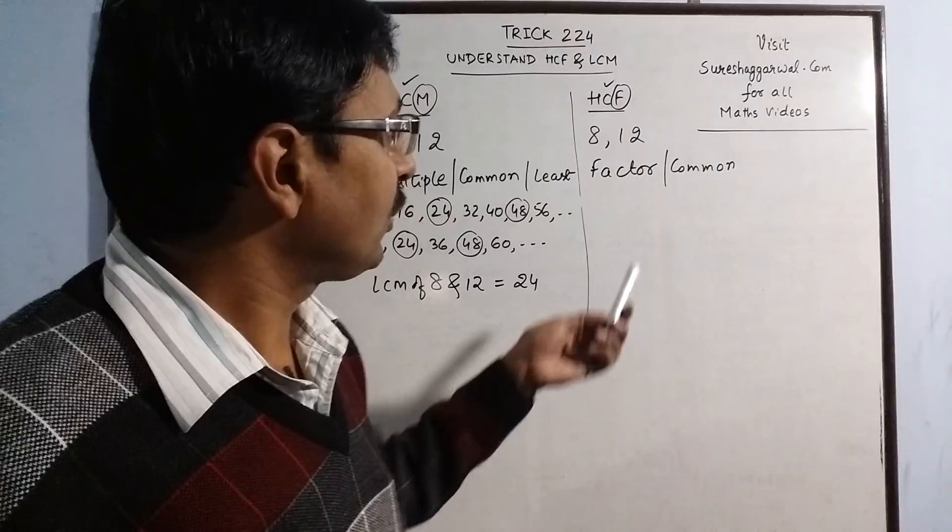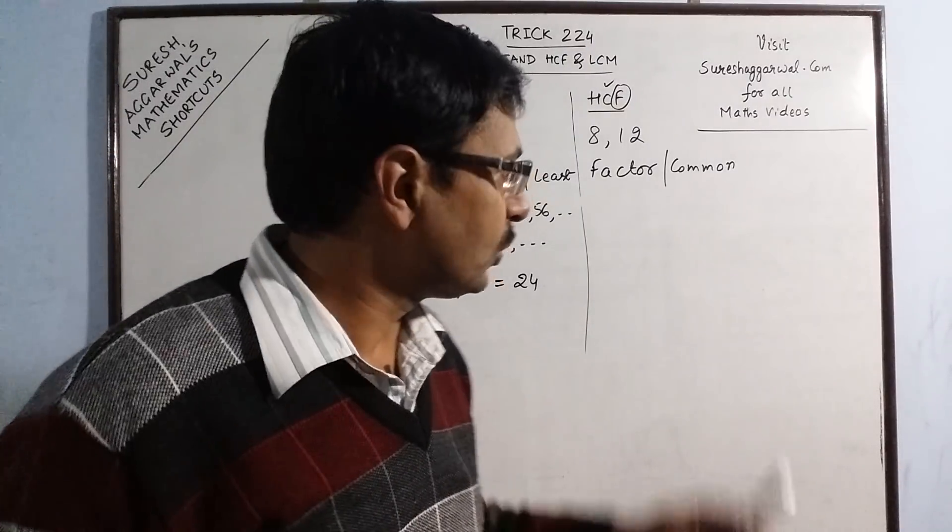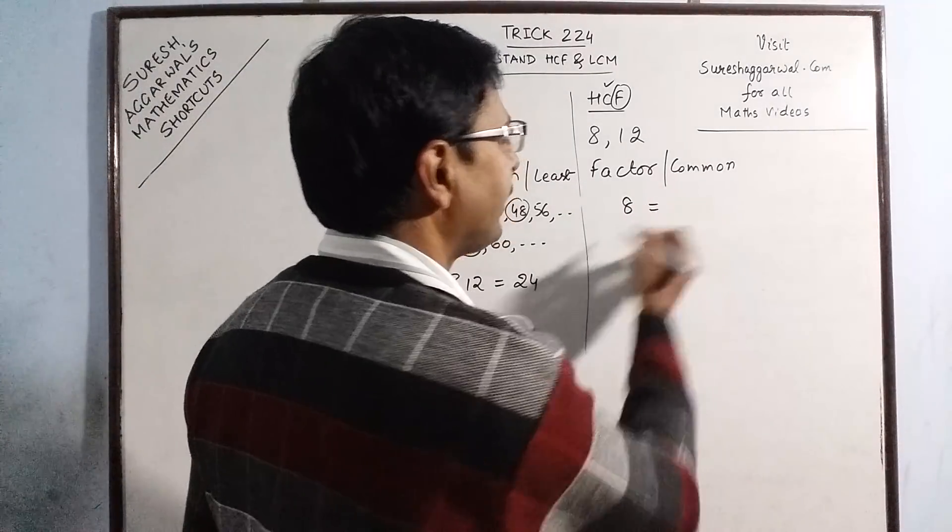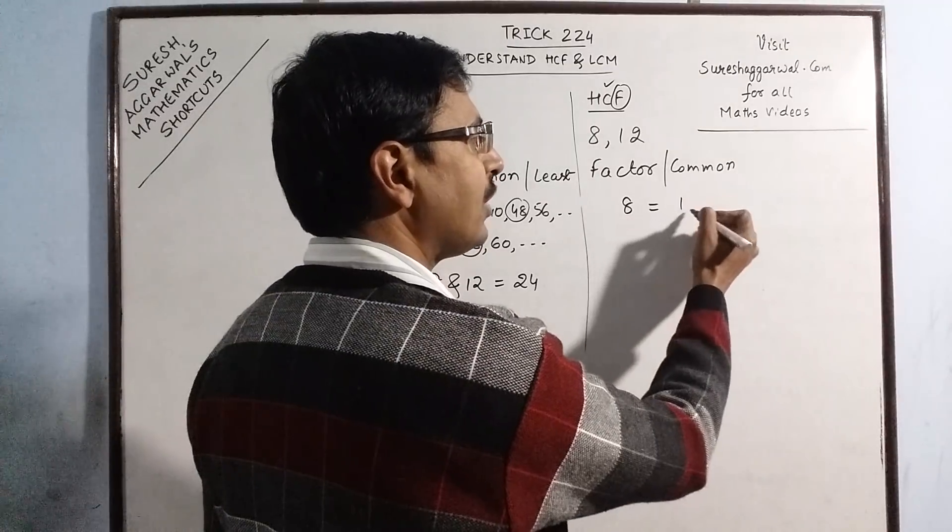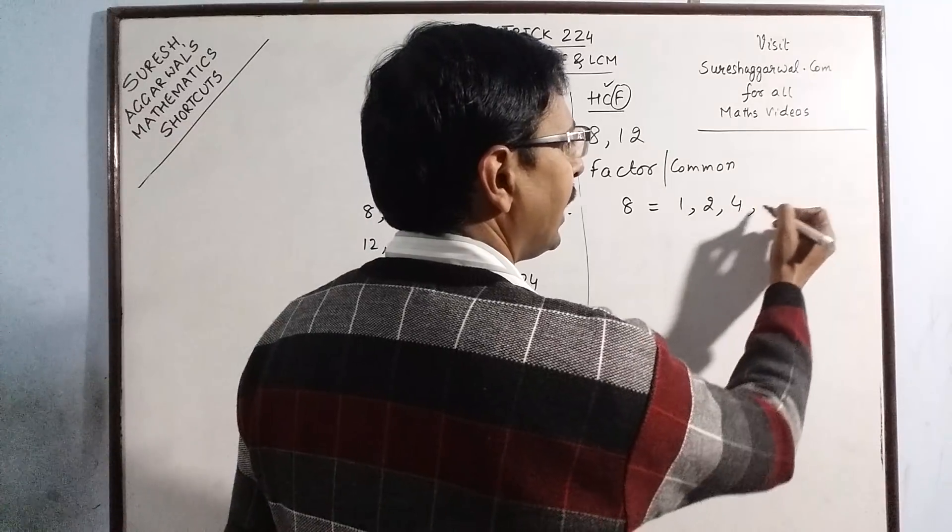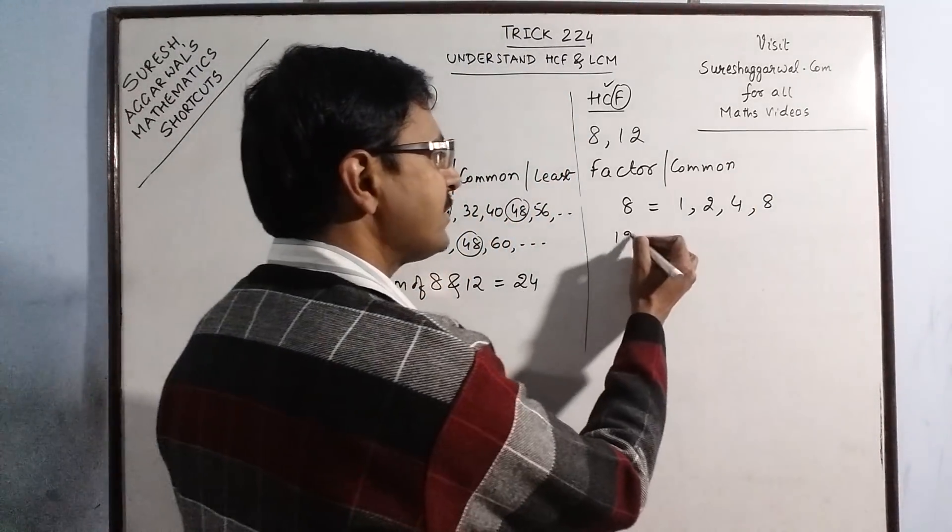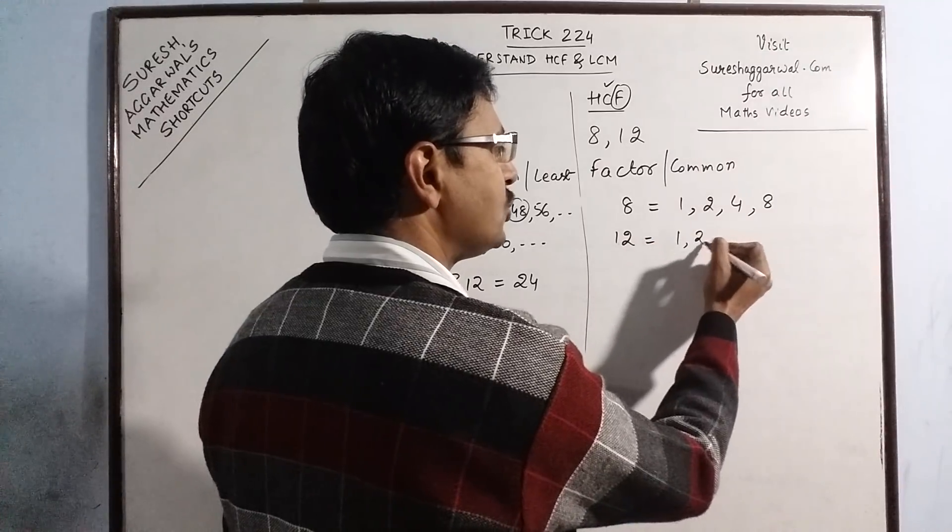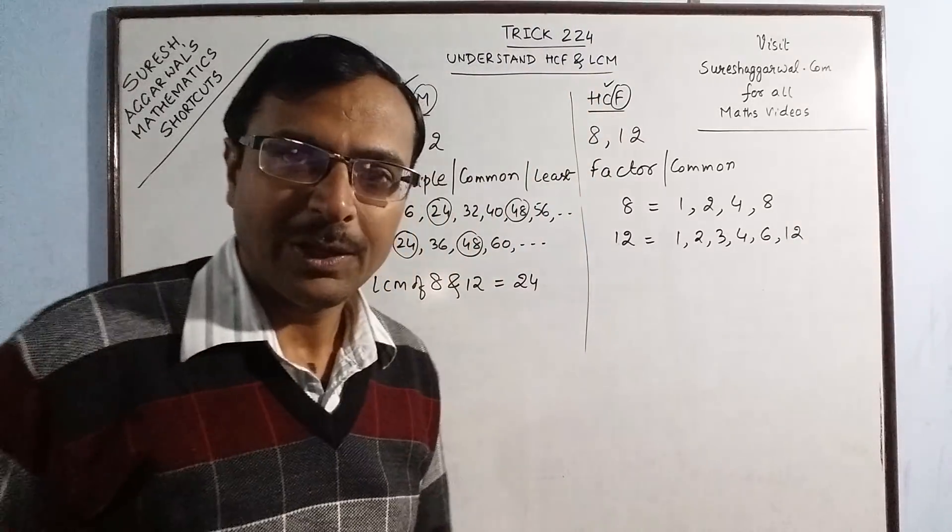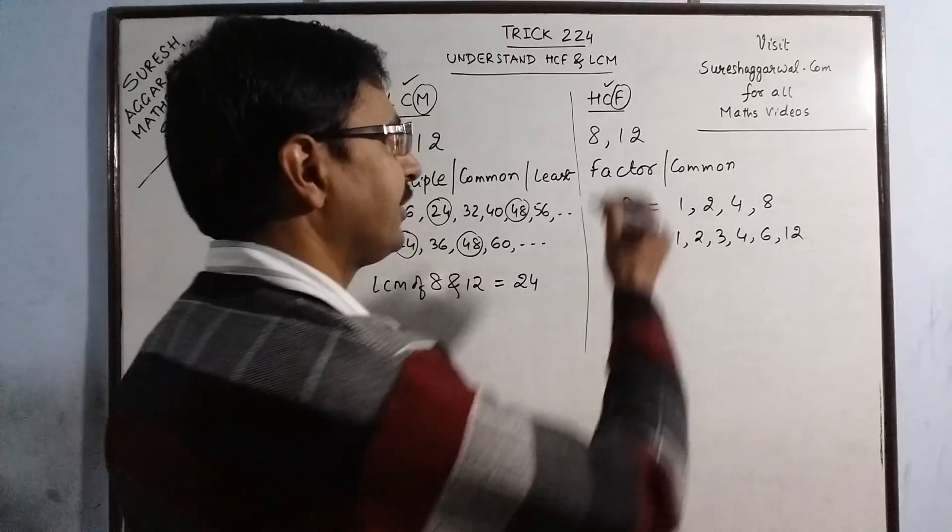Likewise if you want to understand this highest common factor, you can do it in the similar fashion. Now see I am writing the factors of 8: 8 comes in the table of 1, in the table of 2, in the table of 4 and in the table of 8. 12 comes in the table of 1, 2, 3, 4, 6 and 12. Now I have written all the factors of both the numbers. So F is done.